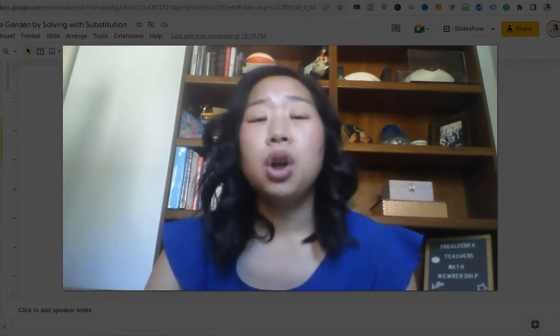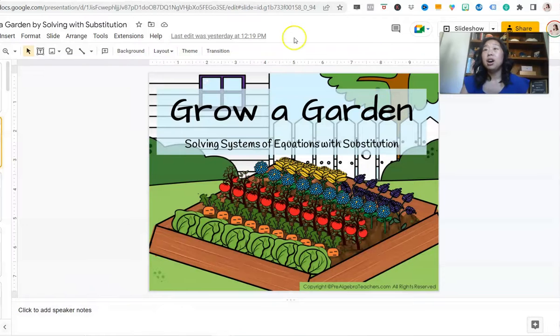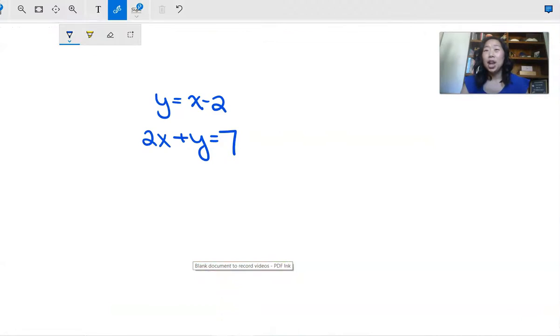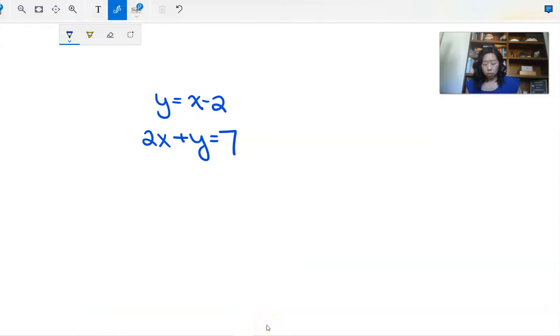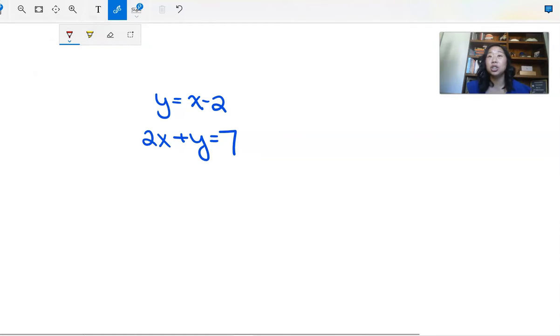So before I actually show you what the resource looks like, I just want to do a quick example. This is what the resource looks like, it's called Grow at the Garden. But before I actually show you what the full resource looks like, I just kind of want to dive into how I teach this. I don't have a revolutionary way of teaching systems of equations, it's pretty standard, but who knows? I just wanted to show you so that maybe if this is new to you, this could be helpful.